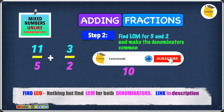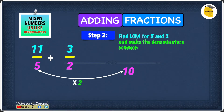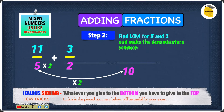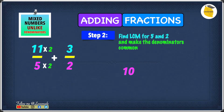The next thing we're going to do is see what number we have to multiply 5 by to give us 10. That number will be 2, because 5 times 2 gives us 10. So we have to multiply the 5 by 2, and whatever we do to the bottom number we have to do to the top number — so we multiply the top number by 2 as well. Now for 2: what number do we have to multiply 2 by to give us 10? That number is 5, because 2 times 5 gives us 10.